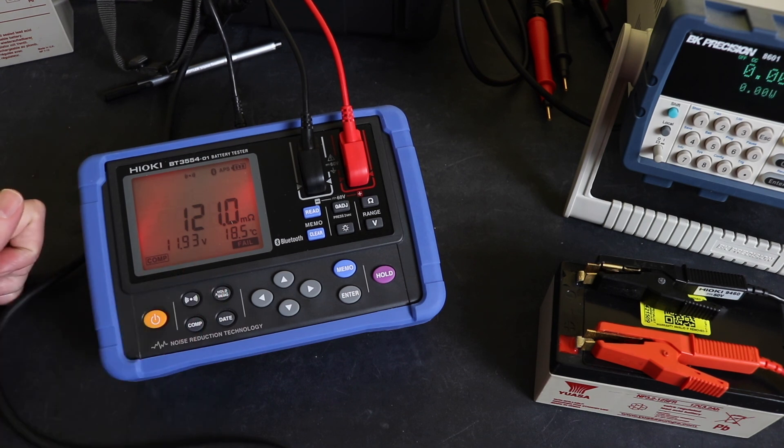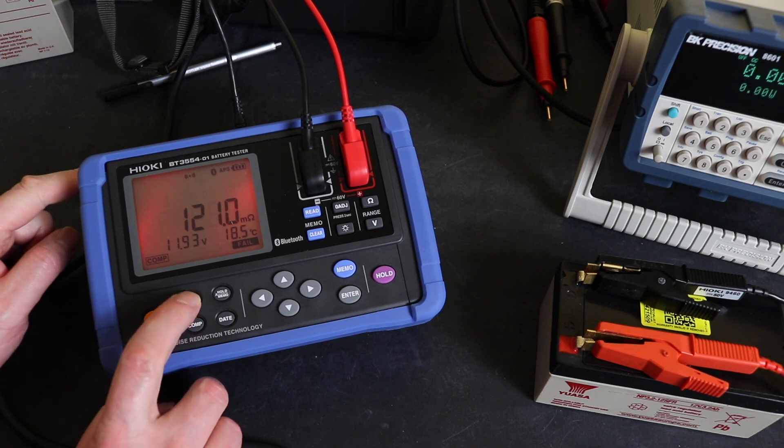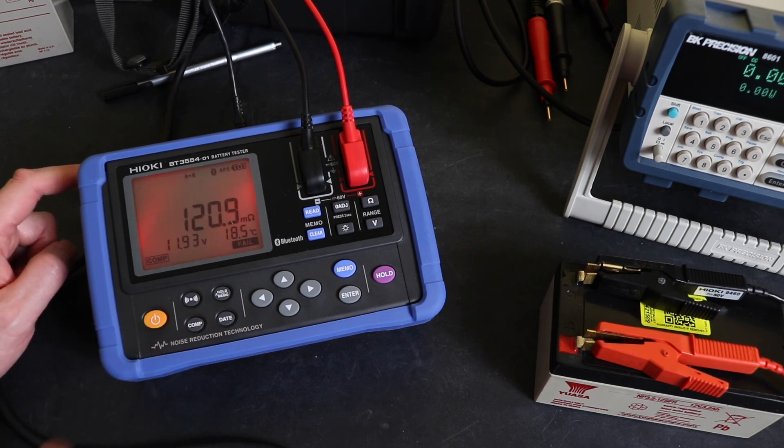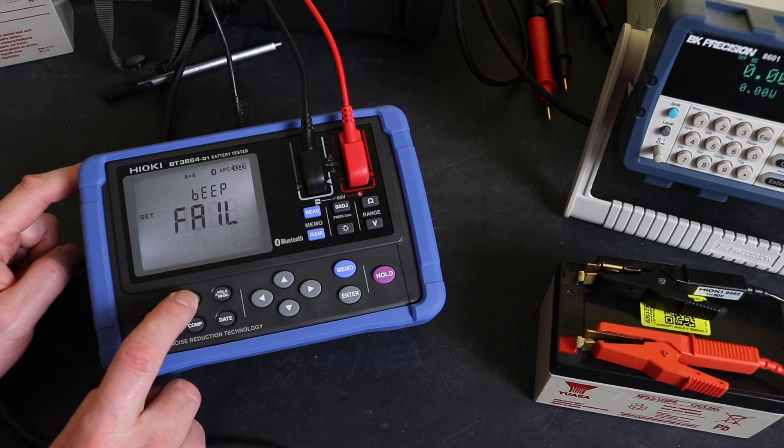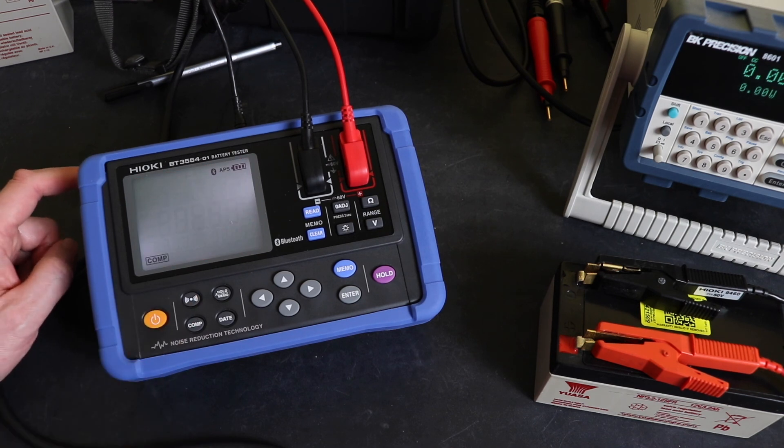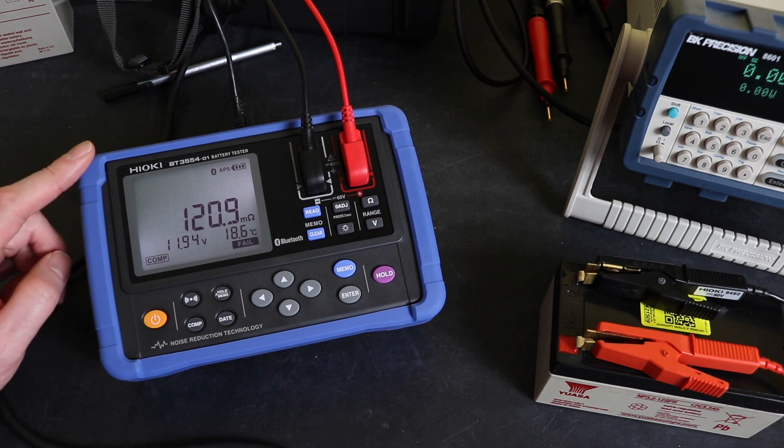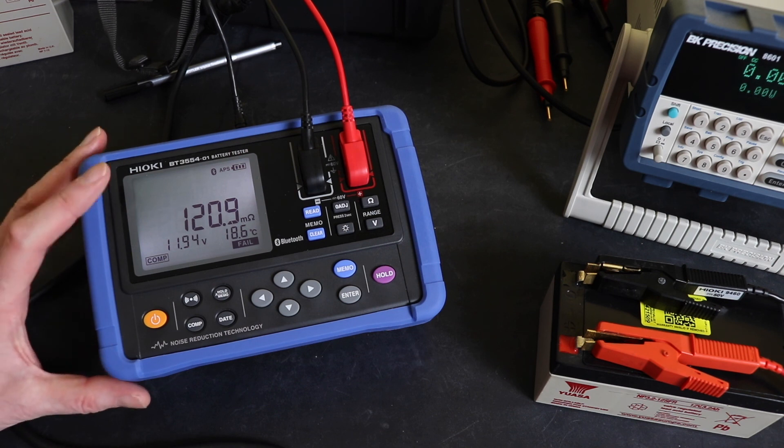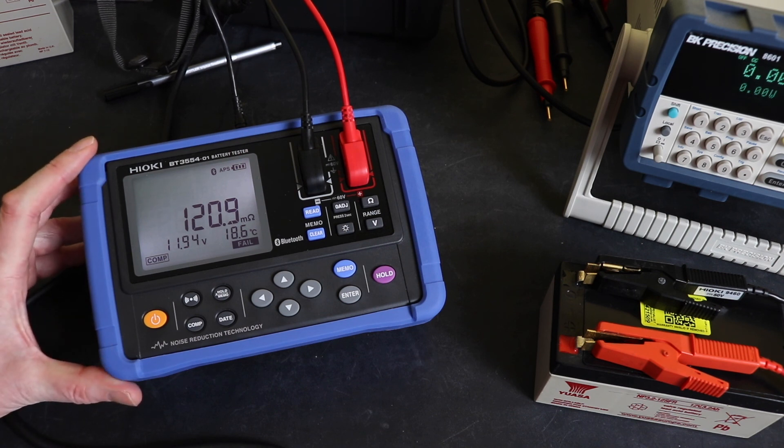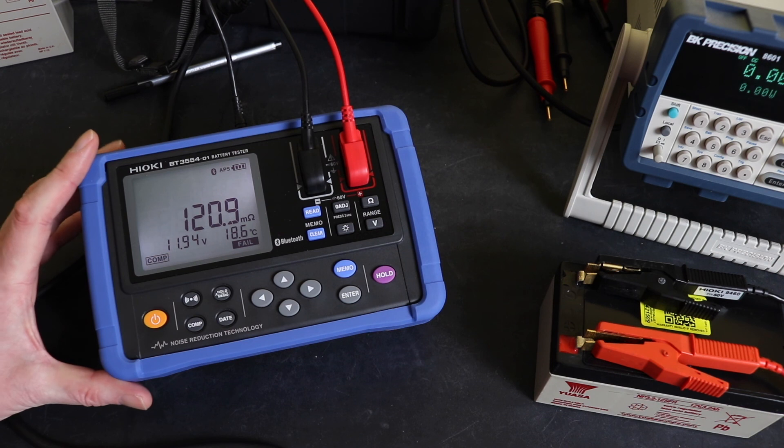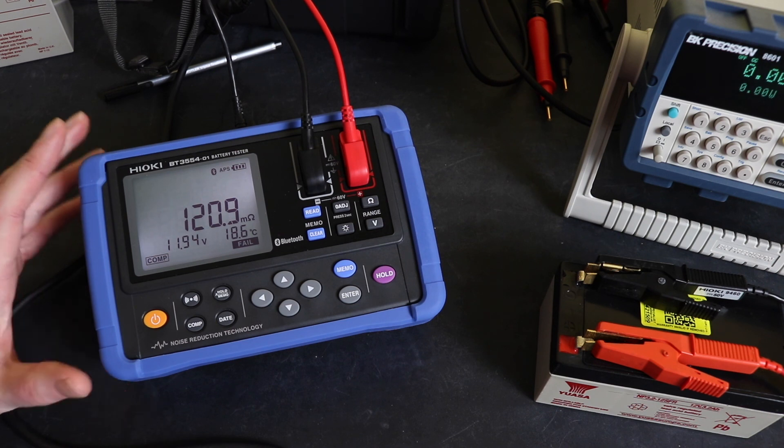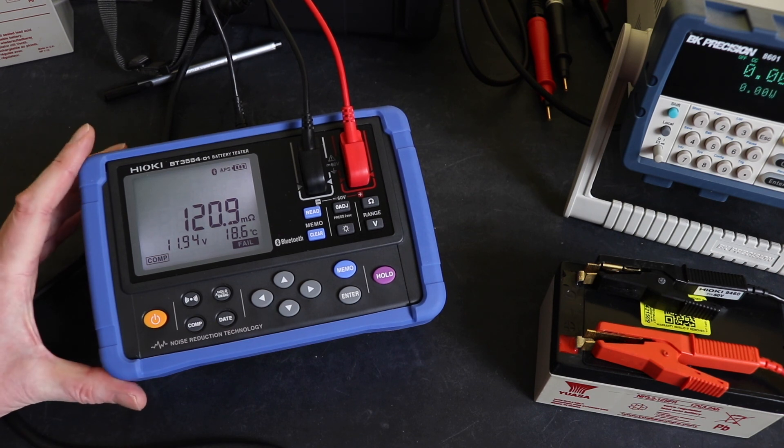You see straight away 120.0 milliohms, 11.93 volts. We've got the whole screen has turned red to say it's a fail. We've got the little fail icon up there and you get a rather noisy beep. Take the beep off, you lose the red screen as well. Fairly comparable readings - 120.9, 121 with the old instrument. But as you see with this one, much faster to record the test result than the old one and much more stable.